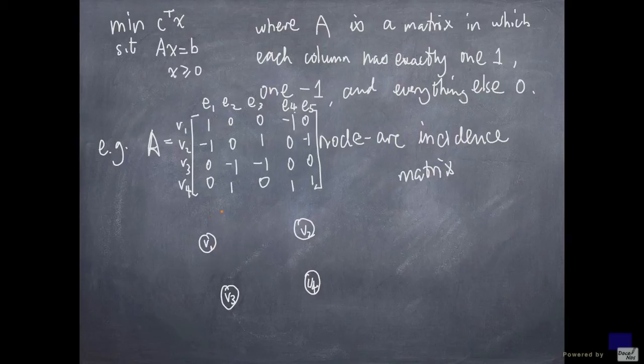Now I look at each column, and for each column I am going to draw an arrow. And the arrow is going to start from the node that has entry 1, and ends at the node that has entry minus 1. So for example, if I look at column e1, I will have an arrow that leaves v1 and enters v2. And I am going to label that e1.